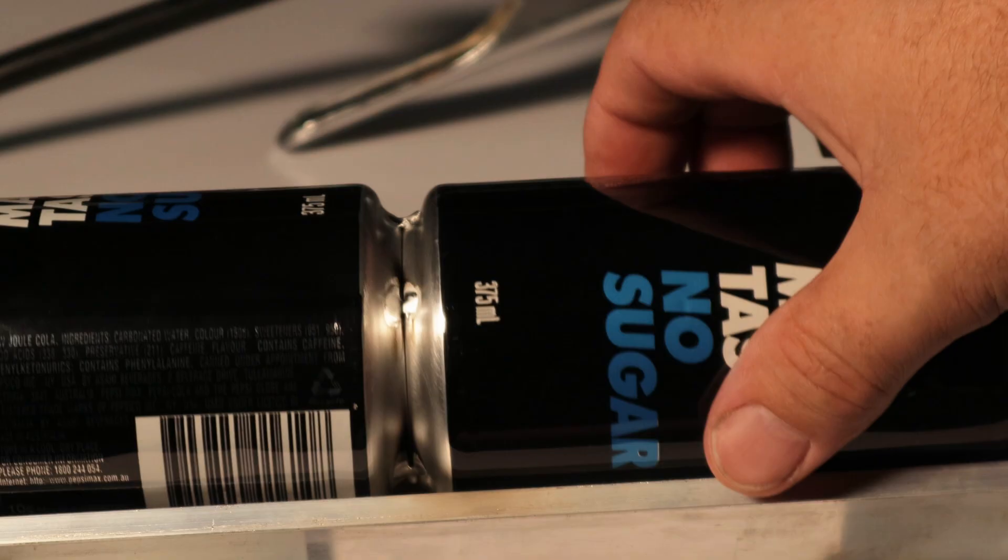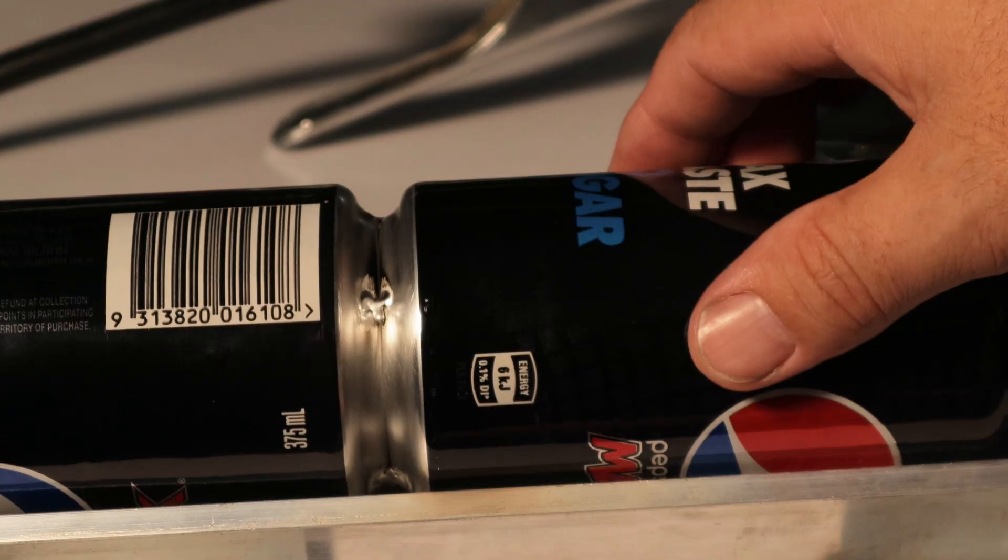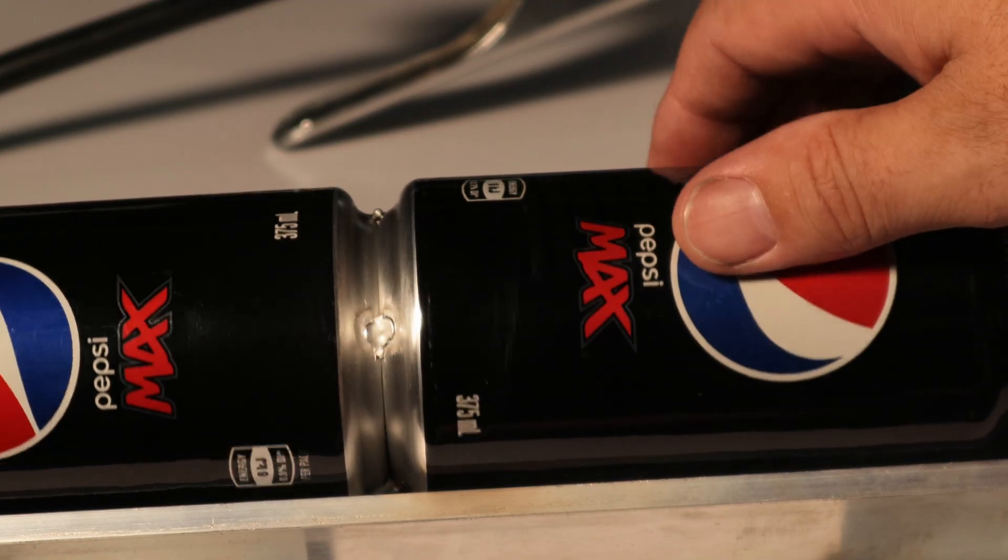To start the weld I position the tungsten as close as possible to the tack and max out the pedal. If the tungsten distance is too far away, the potential for the arc to stray and blow a hole in the can is increased. Don't ask me how I know.